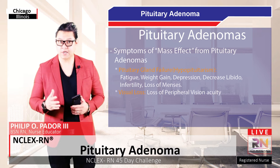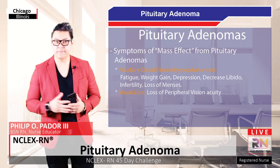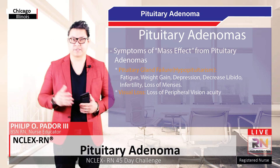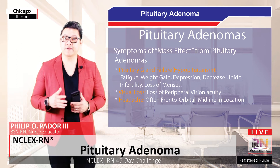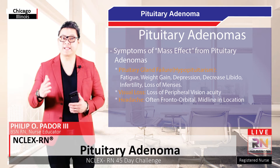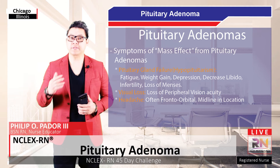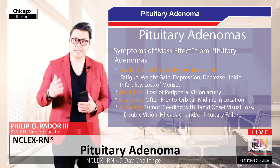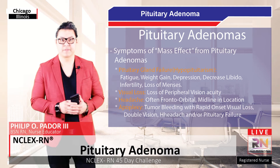Symptoms may also include visual loss from pressure on the optic chiasm and optic nerves, headaches which are often frontal, temporal, or midline in location, and pituitary apoplexy from the tumor bleeding.